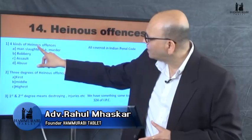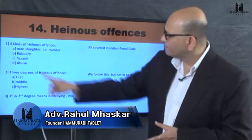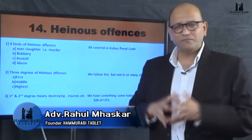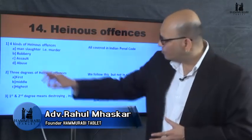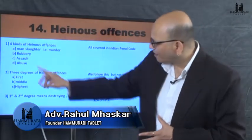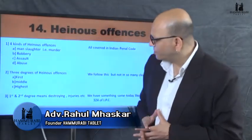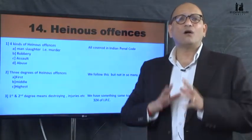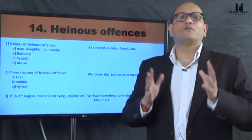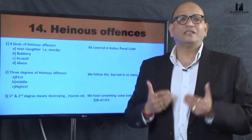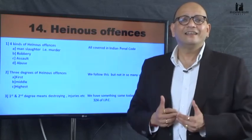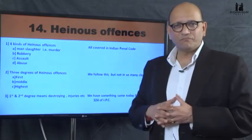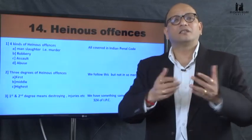There are four kinds of Heinous Offenses: Manslaughter (that is Murder), Robbery, Assault, and Abuse. All four kinds of offenses can be seen identically in today's Indian Penal Code, which covers all of them.